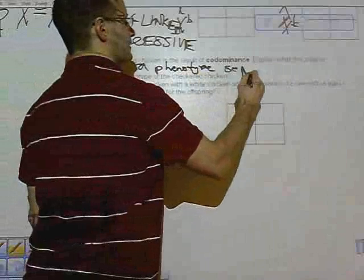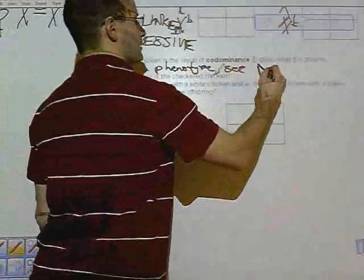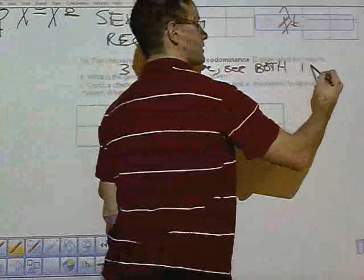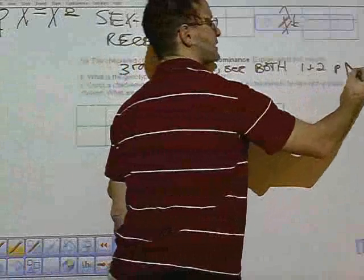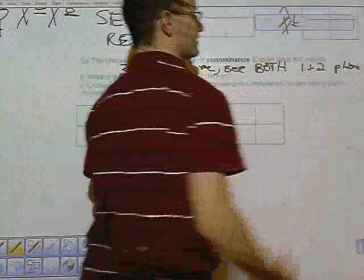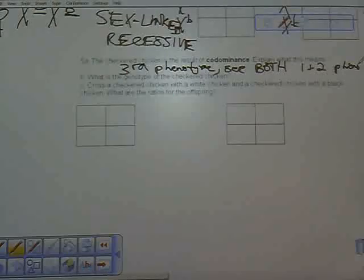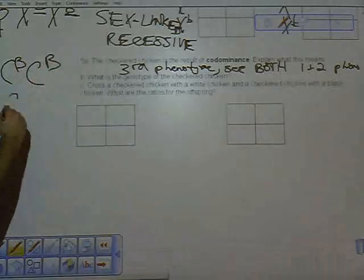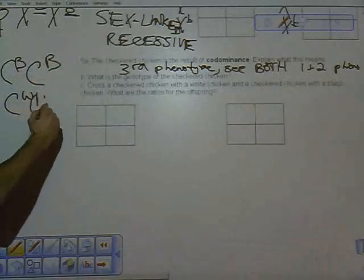That means we have a third phenotype where we see both the first and second phenotype at the same time. Meaning if black and white are the first two phenotypes, black and white is the third phenotype. So it says what is the genotype of a checkered chicken? Well, just like the letters we've already used for the example of the cow...